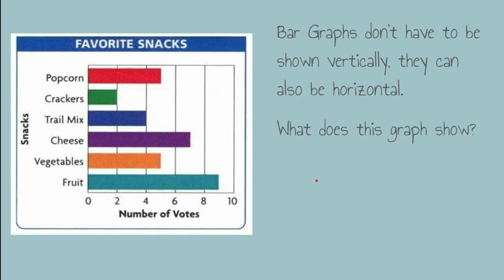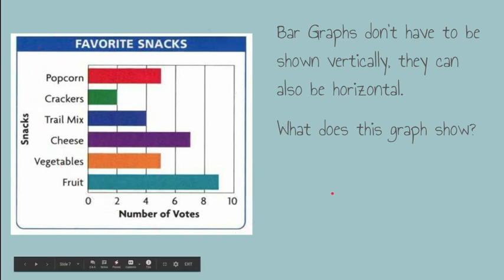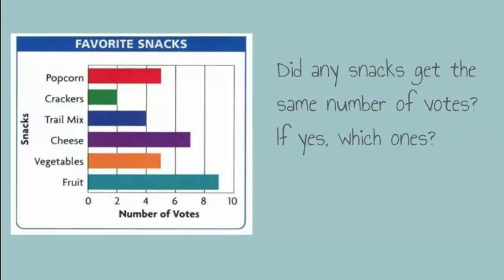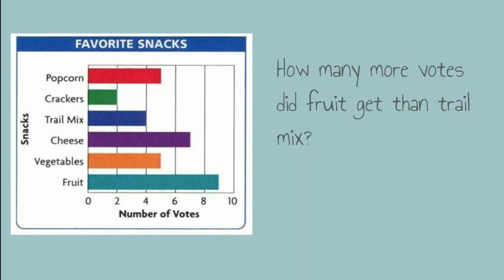Bar graphs don't have to be shown vertically — they can also be horizontal. What does this graph show? How many votes did cheese get? How do you know? Did any snacks get the same number of votes? If yes, which ones? How many more votes did fruit get than trail mix?